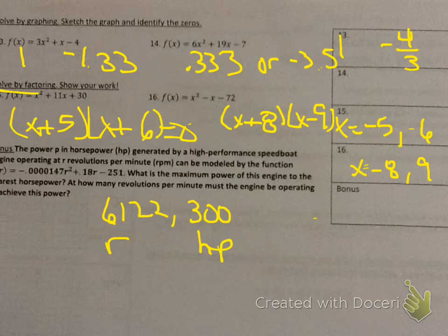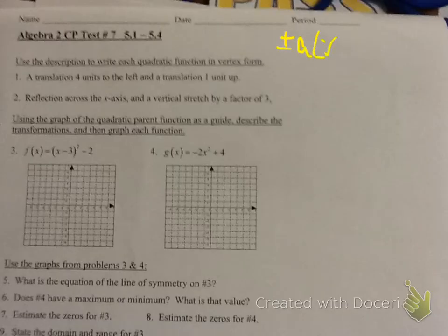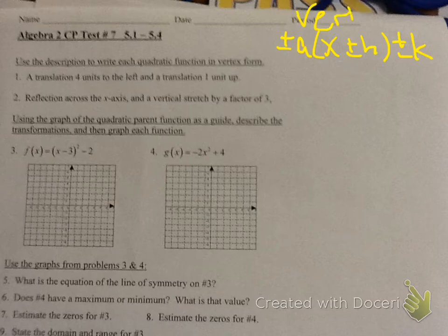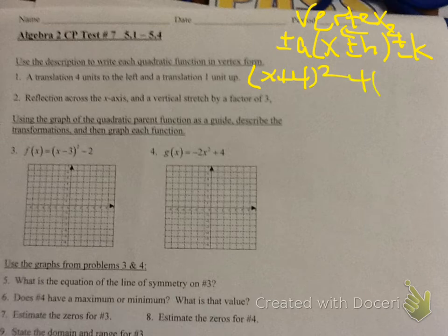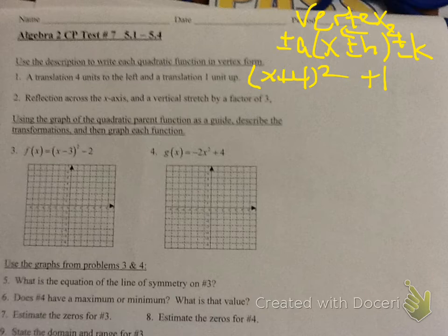Let's look at the review. Make sure you know that vertex formula. When I want to go 4 units to the left, that's x plus 4, and 1 up should be plus 1. So: x plus 4 squared plus 1. The 4 units to the left means plus 4 inside the parentheses; up 1 means plus 1 outside.